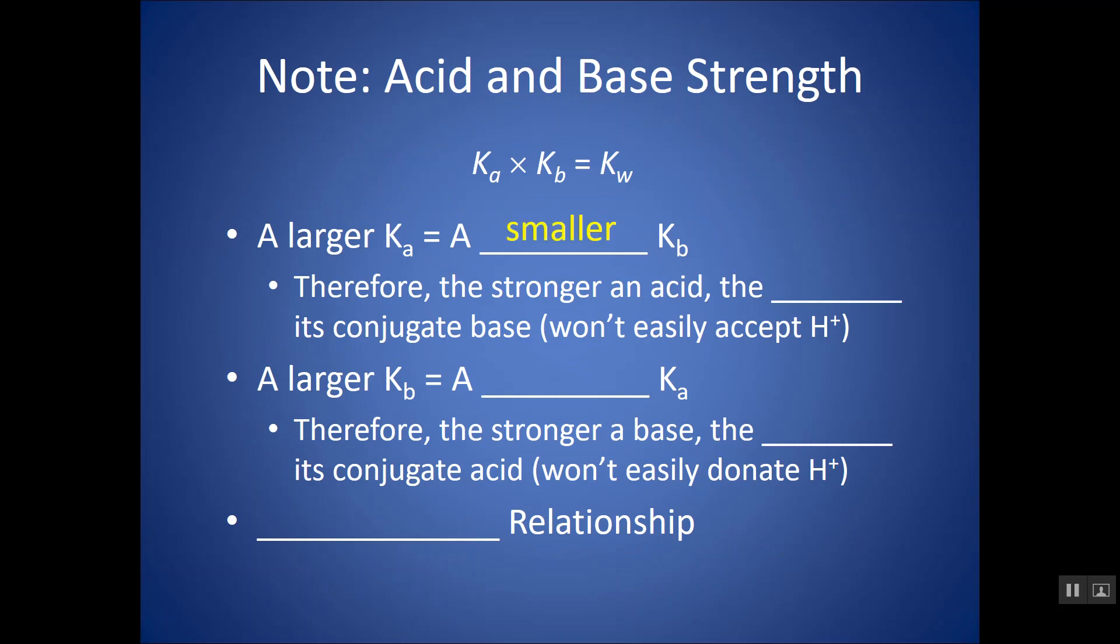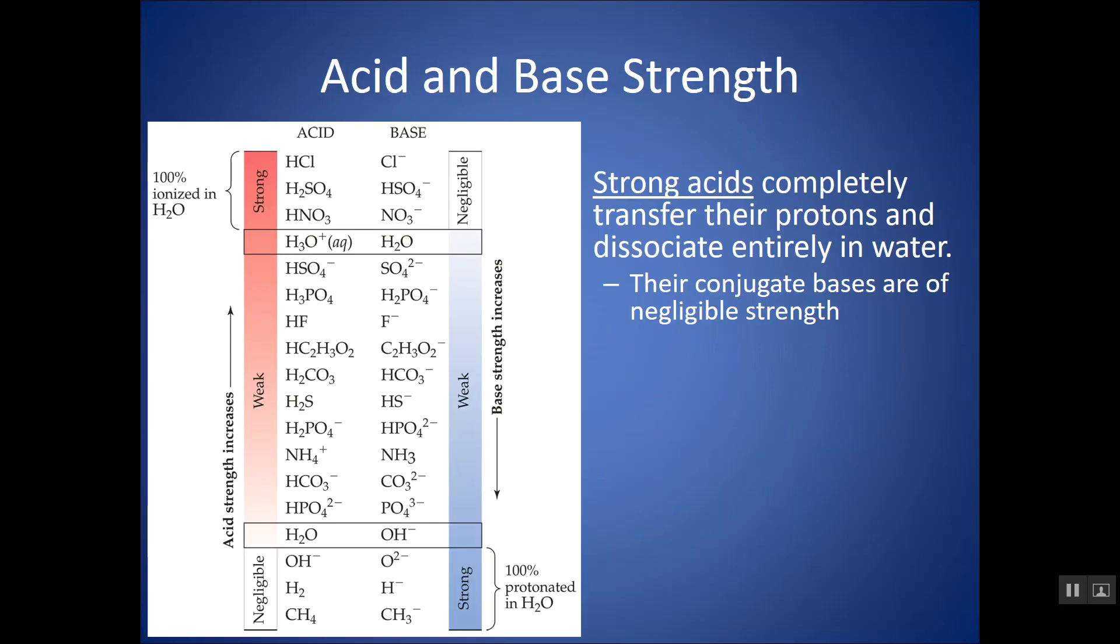So again, the larger the Ka, the smaller the Kb, and therefore the stronger the acid, the weaker its conjugate base. The larger the Kb, a smaller Ka, therefore the stronger base, the weaker its conjugate acid. It is an inverse relationship.